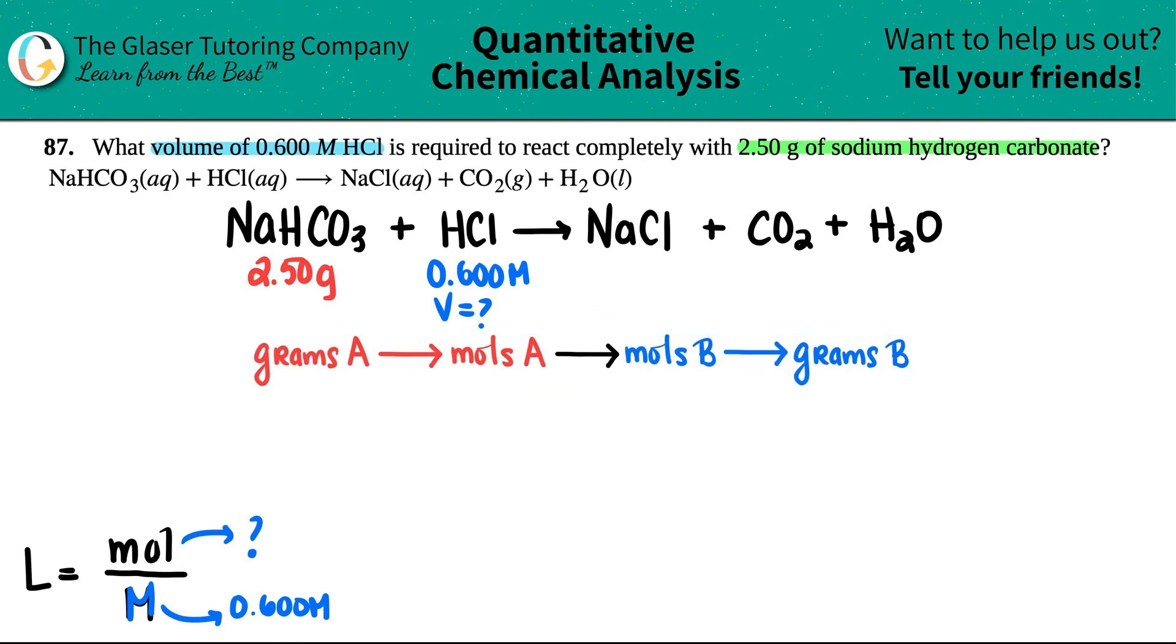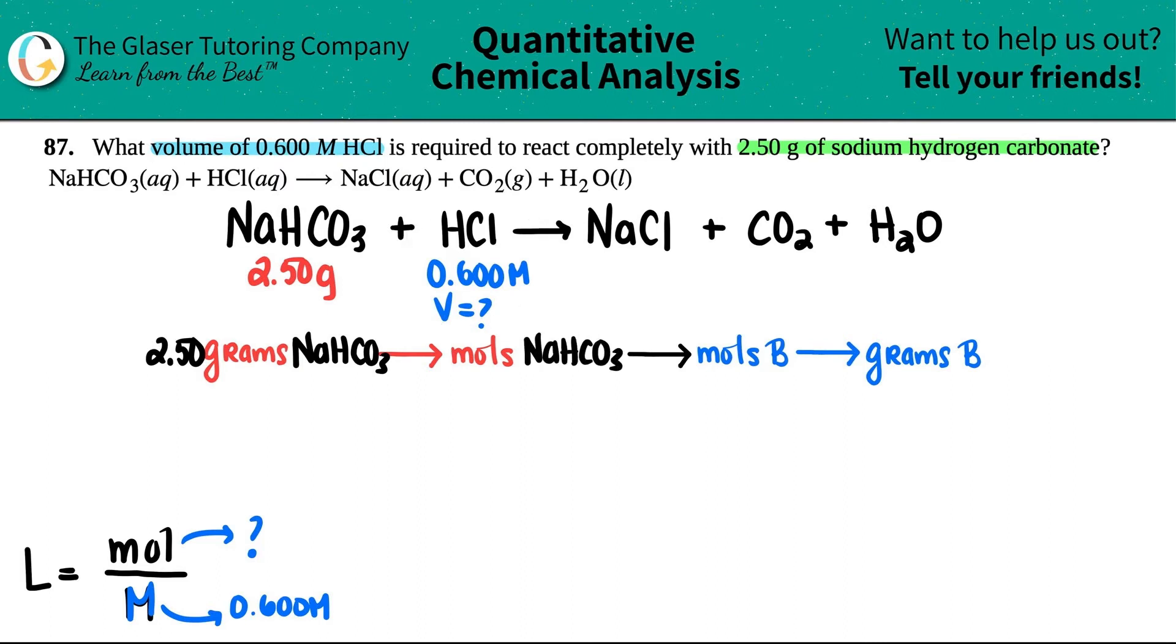So the starting material is the NaHCO3. They told me that I have 2.50 grams of the NaHCO3. From there, I could find out, actually, this is kind of a little tight. So maybe I'll just do that. NaHCO3. From there, I could find the moles of NaHCO3. And then I can convert to moles of the other compound.